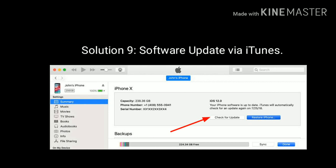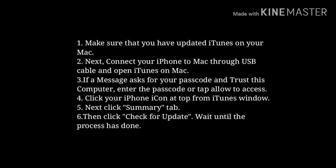Solution 9: Software update via iTunes. Make sure that you have updated iTunes on your Mac. Next connect your iPhone to Mac through USB cable and open iTunes on your Mac. If a message asks for your passcode and to trust this computer, enter the passcode or tap Allow to access. Then click your iPhone icon at the top of the iTunes window, next click the Summary tab, then click Check for Update and wait until the process is done.